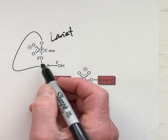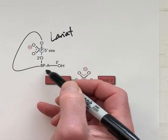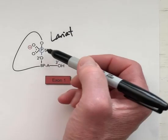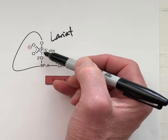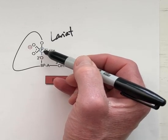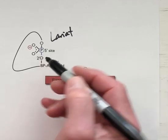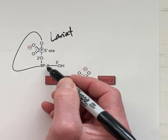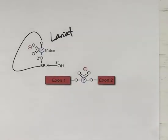And that lasso is constructed because at the branch point A there are three phosphodiester linkages. One between the two prime hydroxyl and the five prime site phosphorus or the phosphorus that used to be at the five prime site. There's another one at the five prime hydroxyl and at the three prime hydroxyl that are not shown here for branch point A.